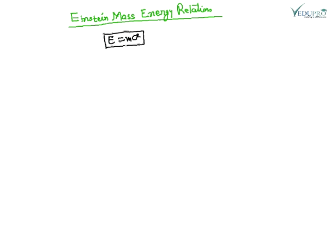According to classical mechanics, energy is defined in terms of work — that means force into distance. The force is the rate of change of momentum: F equals dp upon dt. We also know that p equals mv. This is equation number one.